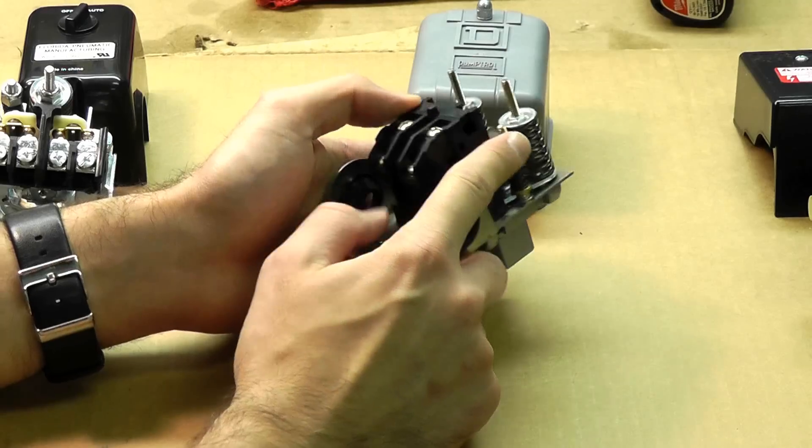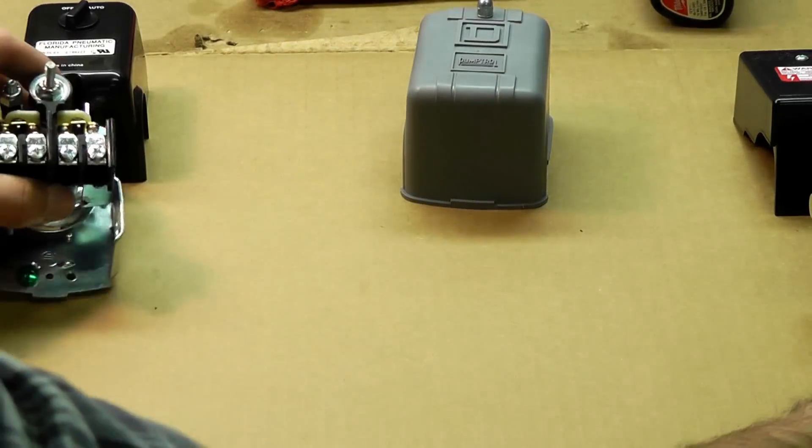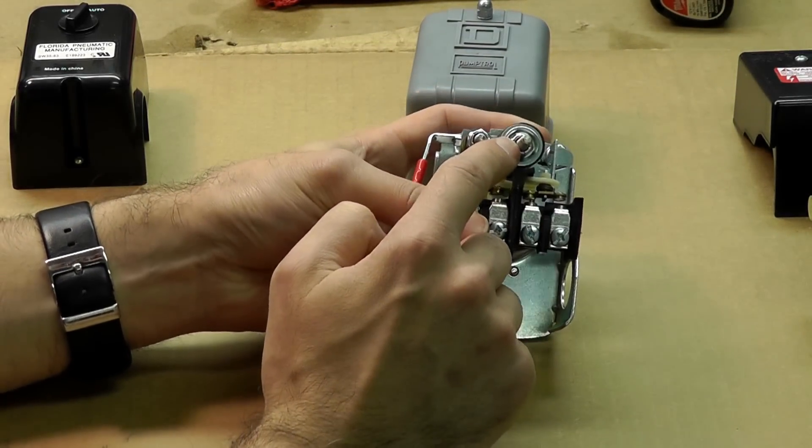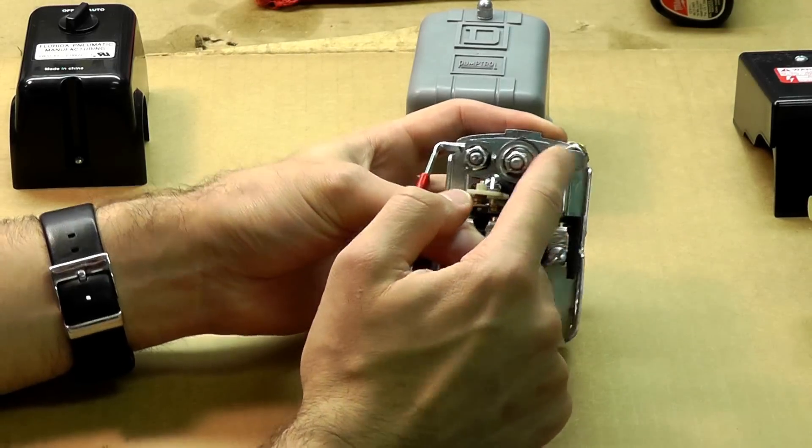And of course your Square D switch has a similar setup. It has the large screw which will adjust the main cut-in and cut-out pressure, or the minimum rather. So it's a minimum adjustment screw: clockwise to increase, counterclockwise to decrease.